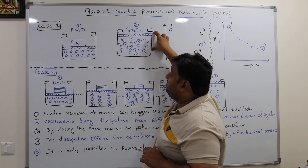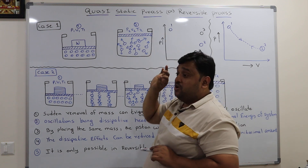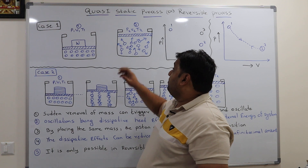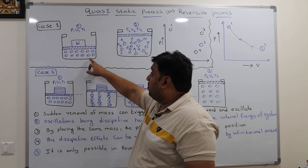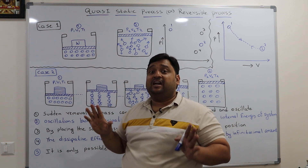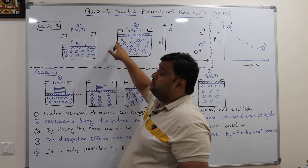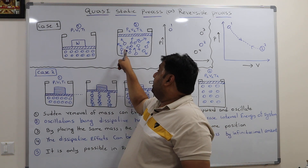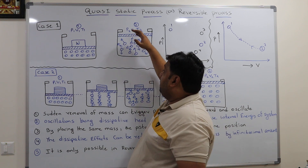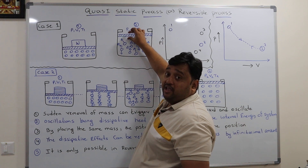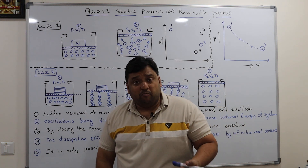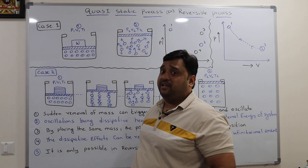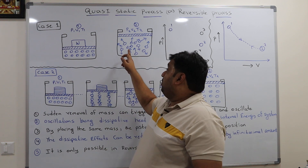The objective of bringing the system from state 1 to state 2 is to get maximum possible expansion. When you remove the mass the piston rises, so expansion takes place — that is state 2, denoted by p2, v2, t2. But if you suddenly remove the mass, the molecules start moving randomly: some push this side, some push that side, some push the corners. Not every molecule is pushing upwards. This sudden expansion causes oscillations of the piston, and because of these chaotic movements — this is called the dissipation effect — you cannot get maximum output from the system.